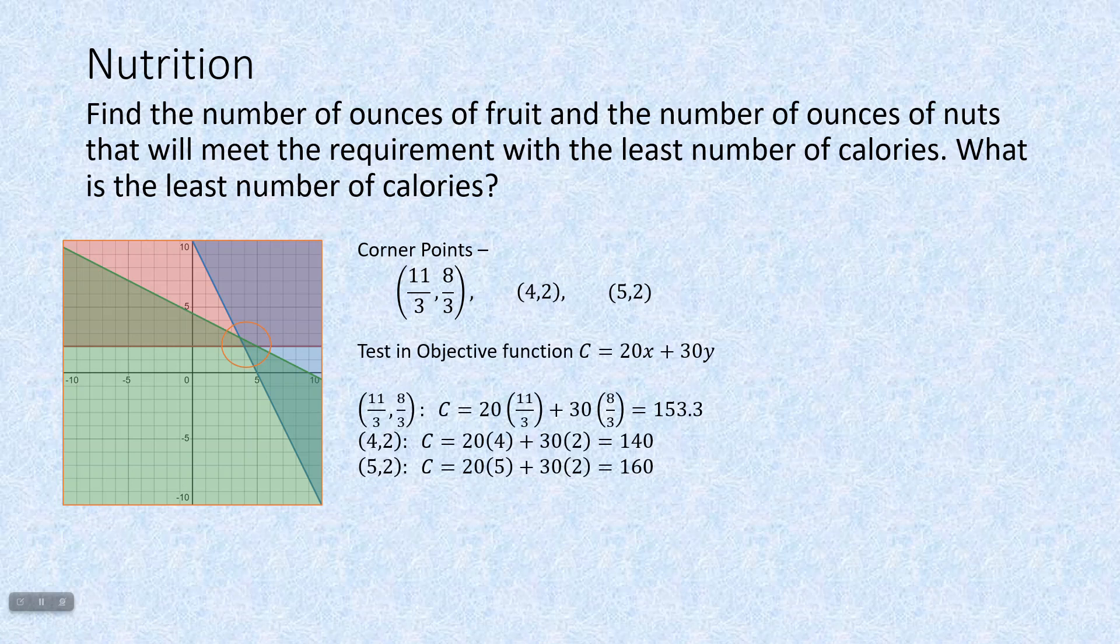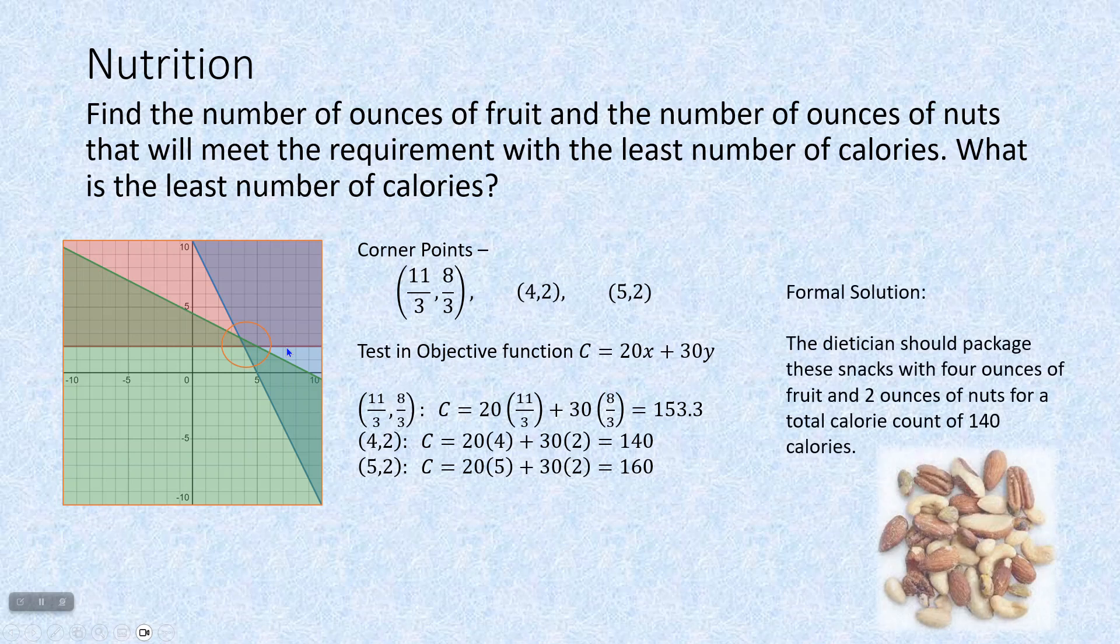Because now that we have our corner points in a bounded feasible region, we can test in our objective function. Calories are equal to 20 times the calories for each ounce of fruit, plus 30 calories for each ounce of nuts. When we plug in eight thirds for y and eleven thirds for x, we end up with 153.3 calories. I know, I just told you use fractions, and here I'm using the decimal. It happens. If we plug in four two, the number of calories is 140, and if we plug in the solution, the corner point five two, we find our calories are 160. We want to know what the least number of calories in our feasible region is, so the dietician should package these snacks with four ounces of fruit, two ounces of nuts, for a total calorie count of 140. So we know exactly how much of each in order to get the nutrition needed.